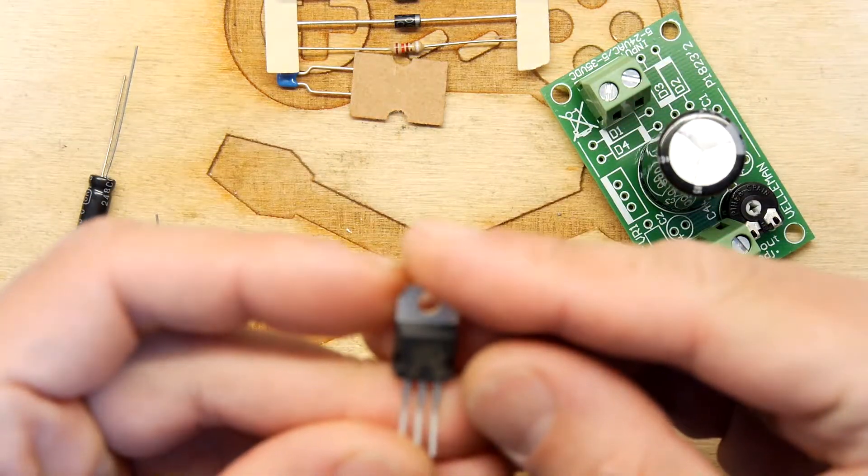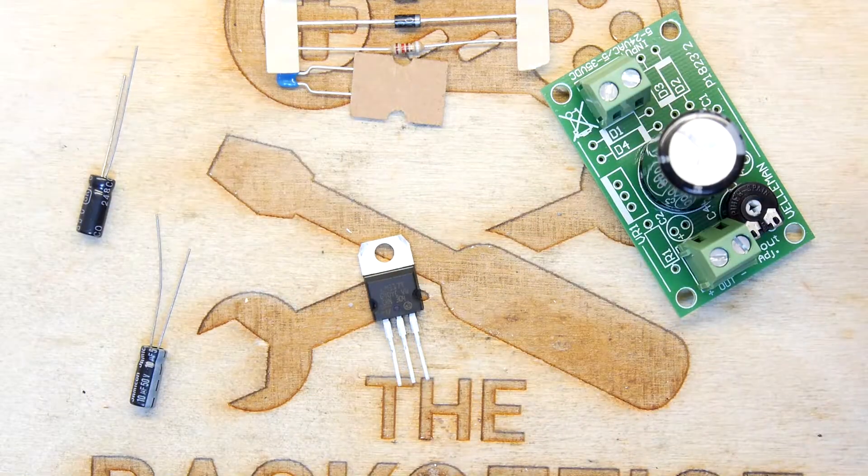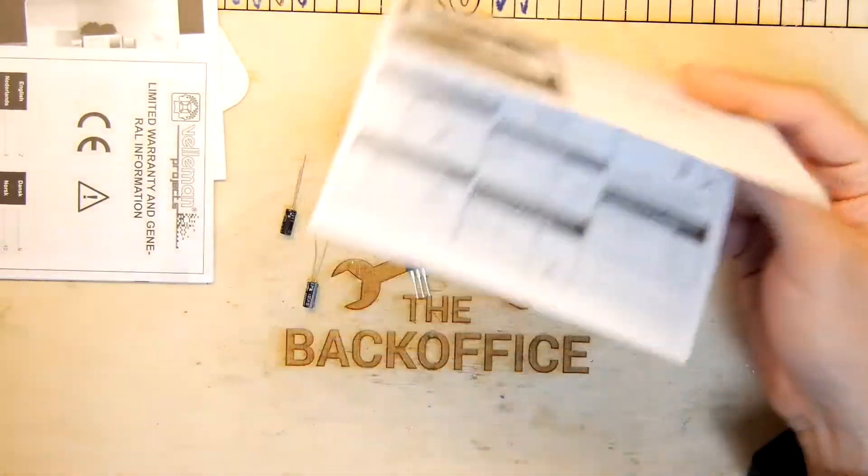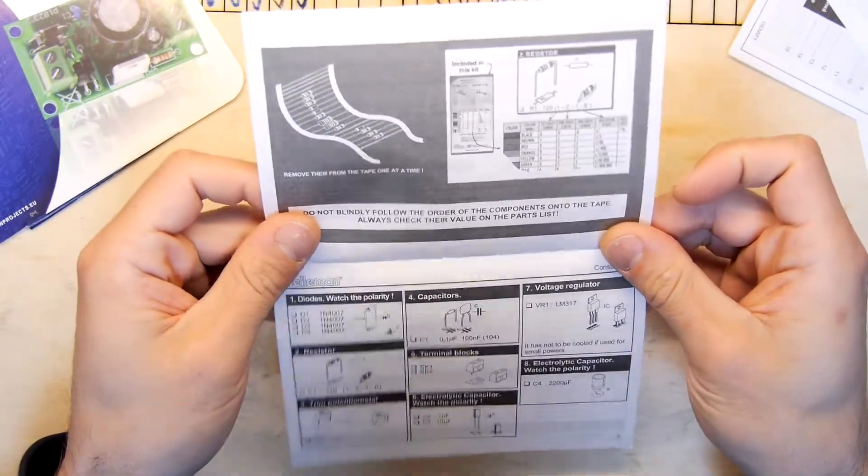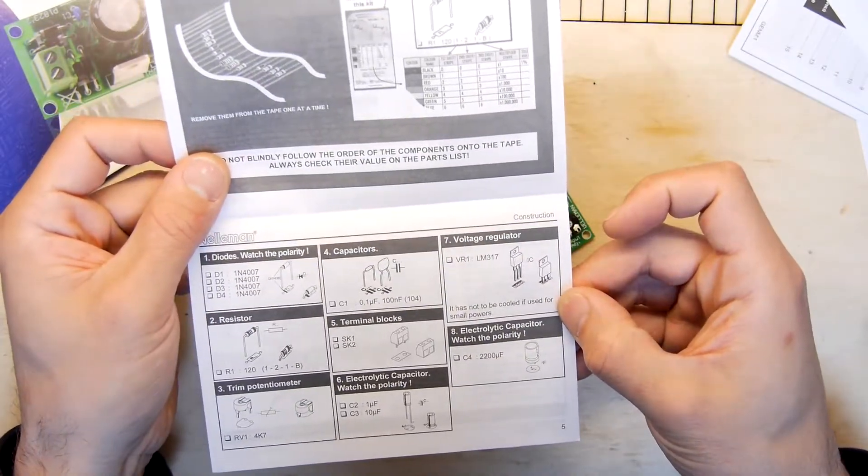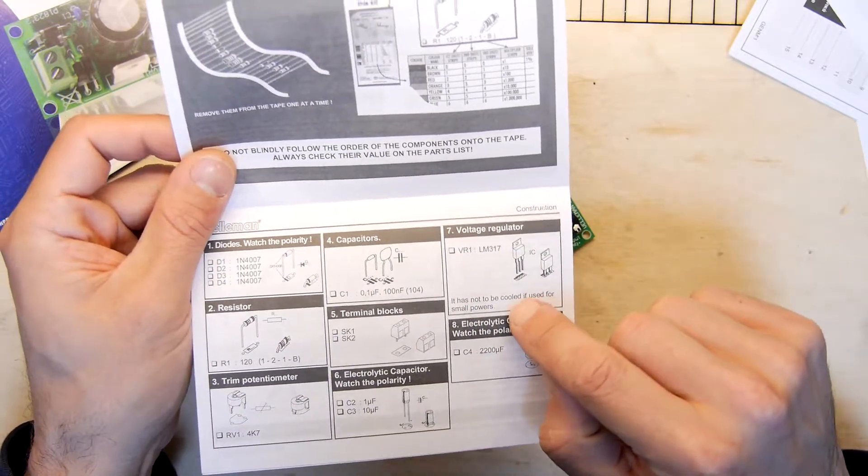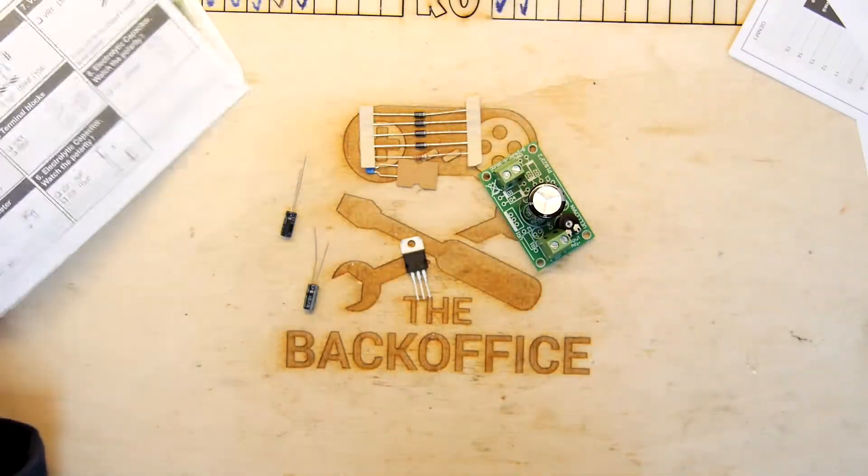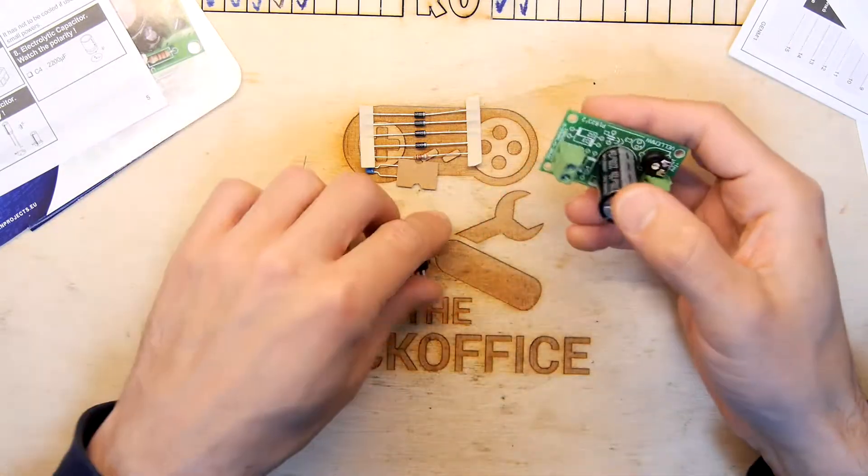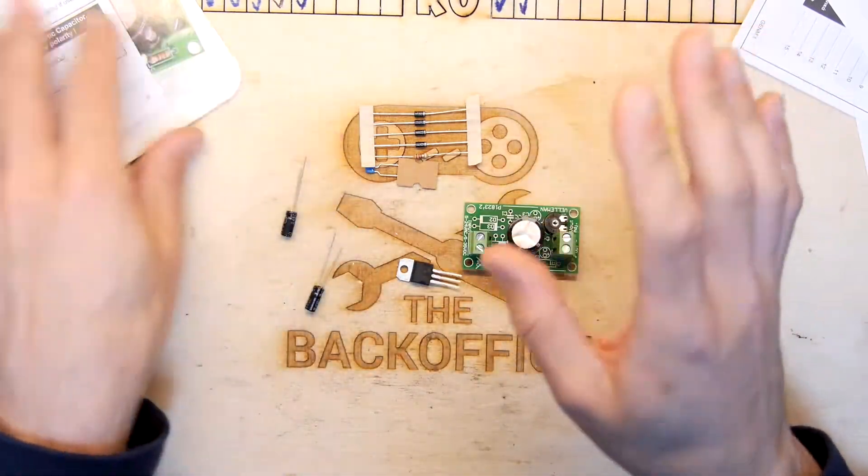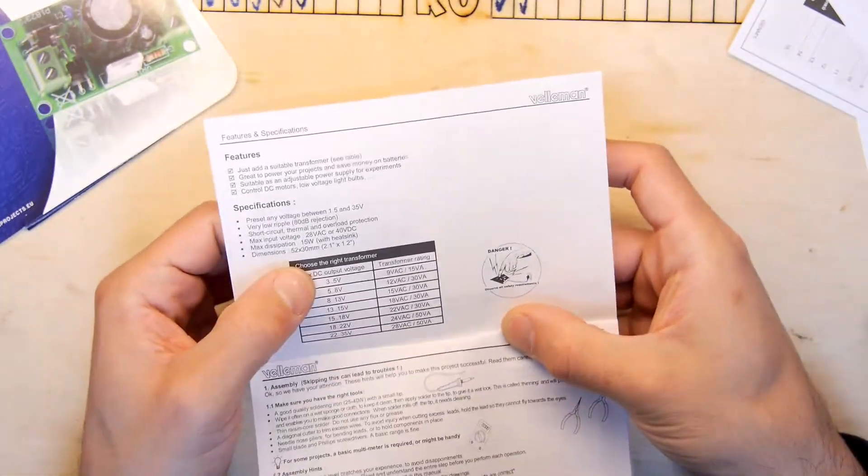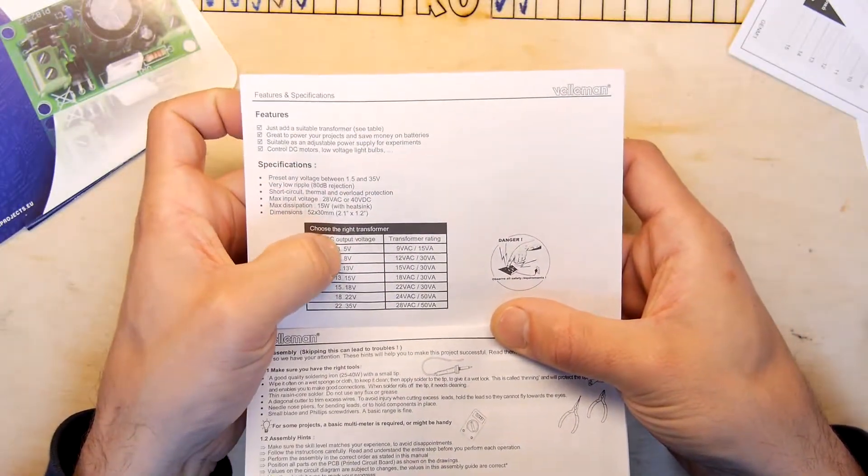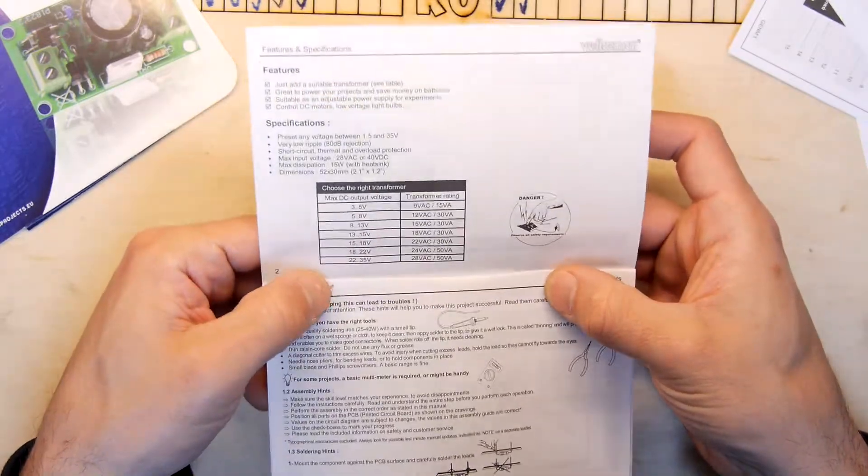Probably a power regulator of some description. LM317. Let's see what the voltage is supposed to be. That's the instructions in Italian, not going to help us at all. Here we go. The easy way to power your projects. LM317, it has not to be cooled if used for small powers. So I'm guessing it's an adjustable voltage regulator, adjusted by this. Maximum DC voltage output seems to go from 3 to 35 volts depending on what you feed it in.